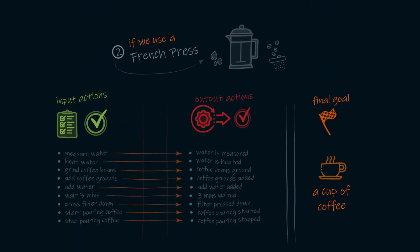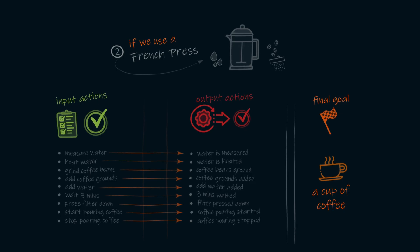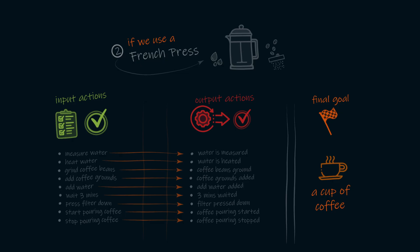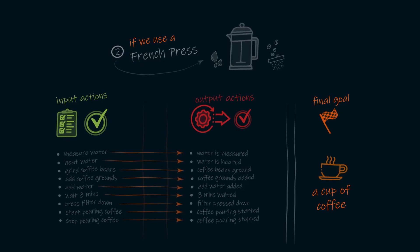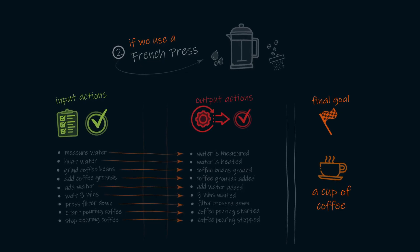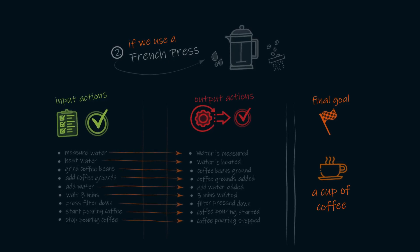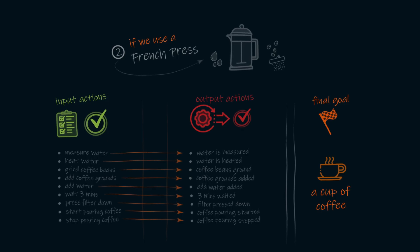Now let's take a look at this same goal, but this time if we used a French press. For this, there'll be more steps we need to complete or many more input actions we need to take. But in this case, there's no longer anything hidden from us. We see our input and the exact output it causes.